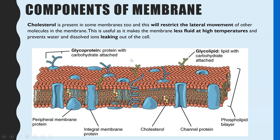Looking at the cholesterol embedded within the membrane — we can see cholesterol molecules in yellow embedded within the phospholipid bilayer. The purpose of cholesterol is to restrict the lateral, sideways movement of the molecules. So the more cholesterol within the membrane, the less fluid it is, or the more rigid. This is useful because it means the membrane will be less fluid at high temperatures. If membranes became too fluid when you became hot, the gaps between the phospholipids would become too large and water and dissolved ions could leak in or out of the cell, causing either dehydration or cells to burst.